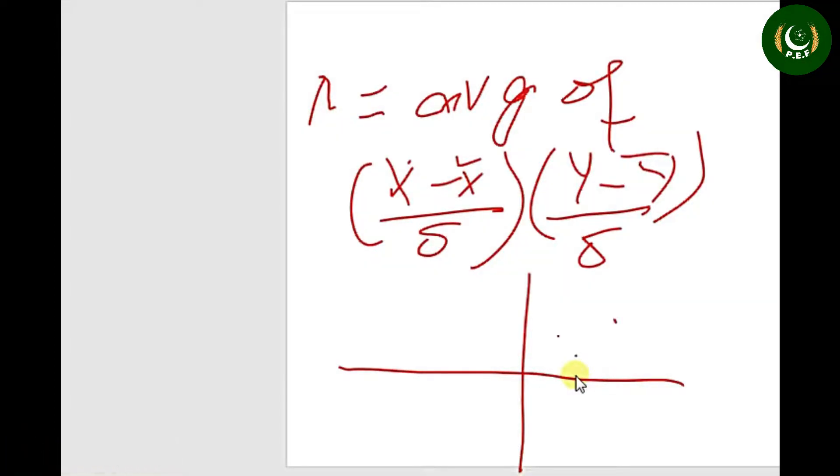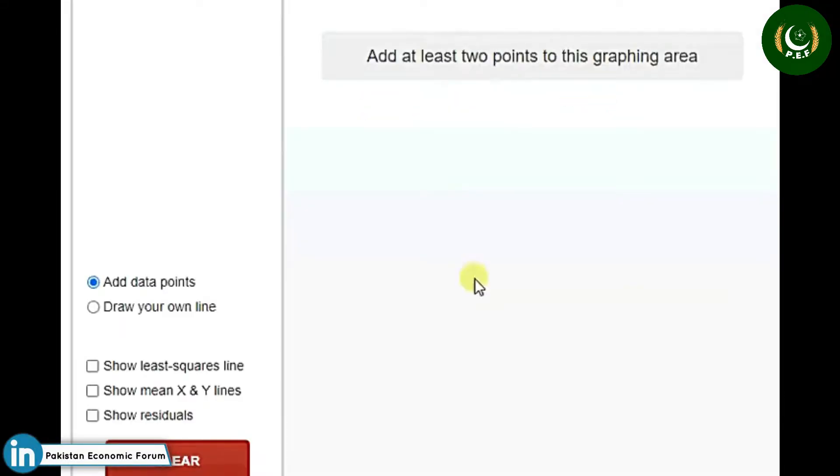You have the standard units. If dots here dominate as compared to this quadrant, correlation is positive. Otherwise, if dots are in the second and fourth quadrant, correlation is negative.